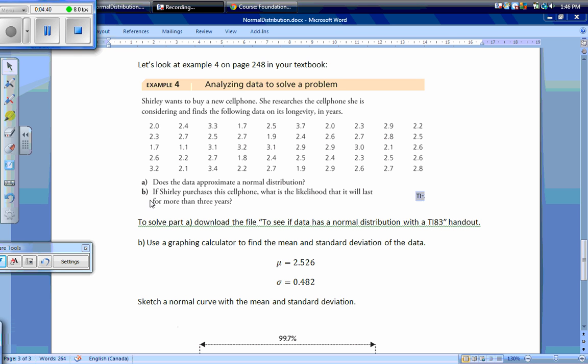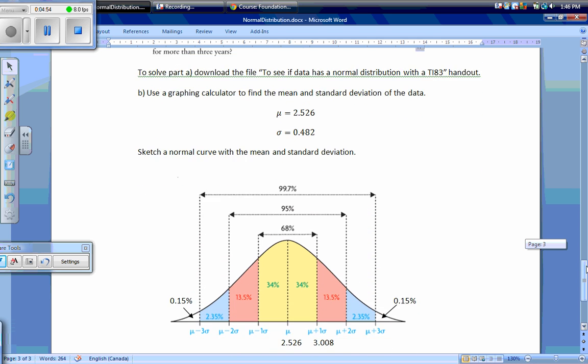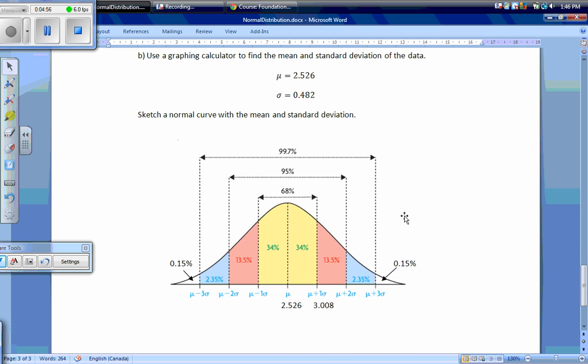To solve part B, use a graphing calculator to find the mean and standard deviation of the data. I got that my mean was 2.526 years, and my standard deviation was 0.482 years. Then sketch a normal curve with the mean and the standard deviation.